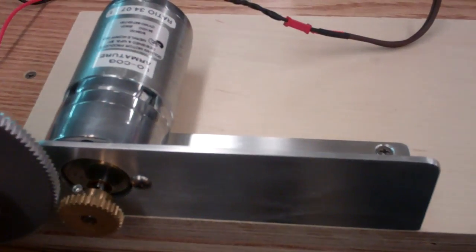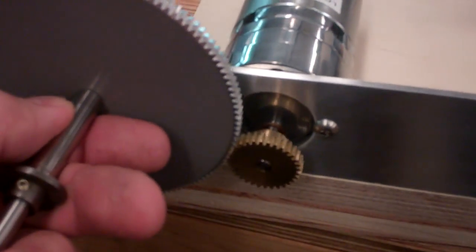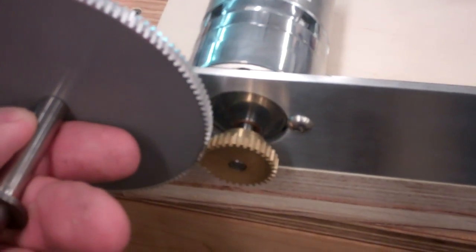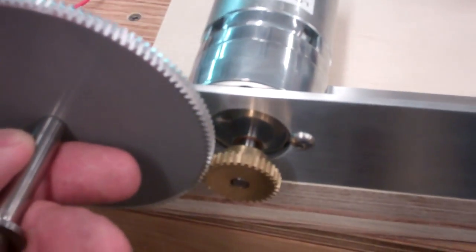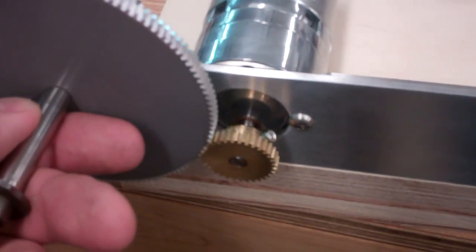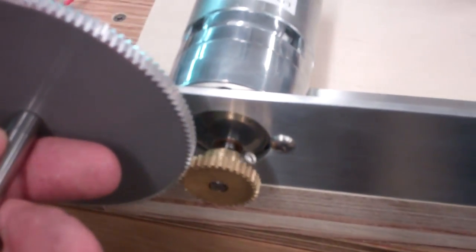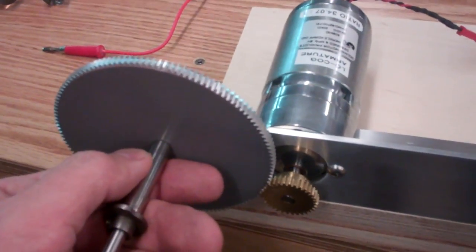So you do have to respect this when you get one of these running. Maybe put a small guard over it to protect your fingers from getting chopped off. There's quite a bit of torque there, and this is only at maybe 10 volts. If you run this at 24, it would be unstoppable.